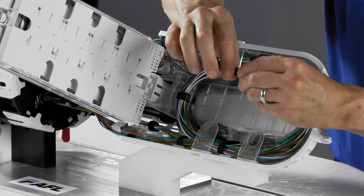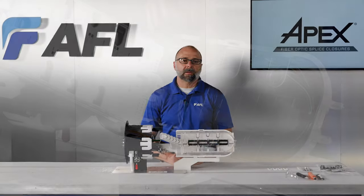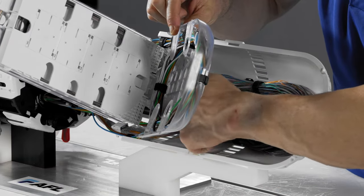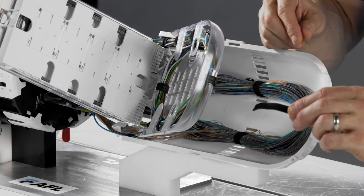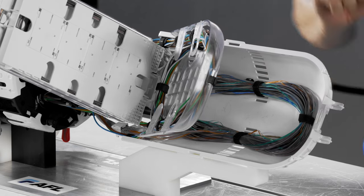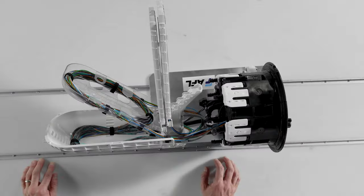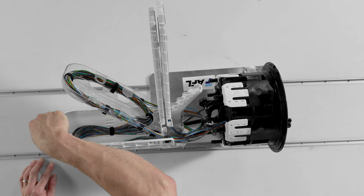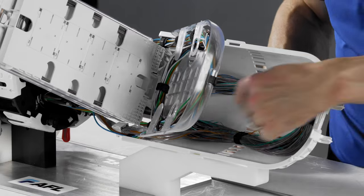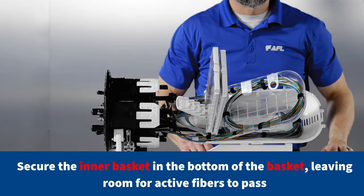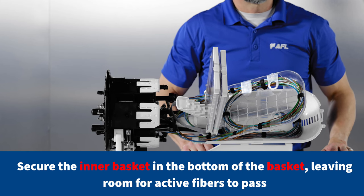On ribbon, we recommend velcro. For loose tube, any typical tie-down method is acceptable. For retention of spiderweb ribbon and other non-matrix ribbon fiber, we recommend using the soft side of the velcro towards the fiber to protect it from snagging on the hook side of the velcro. When storing midsheath or unused end fibers from all cables in apex, coil them to fit between the spline and the top of the basket. Be careful of minimum bend radius and not to kink the buffer tubes while storing. Secure the basket in the bottom of the basket, leaving room for active fibers to pass.